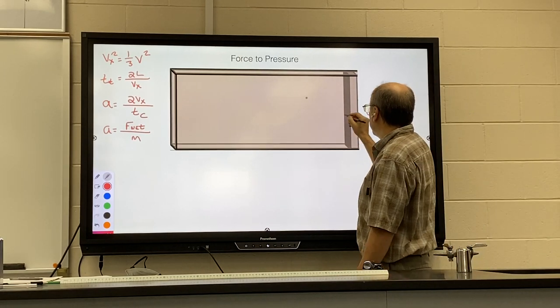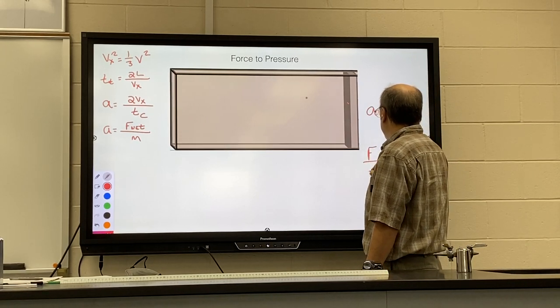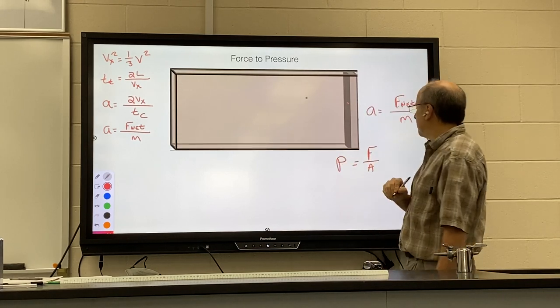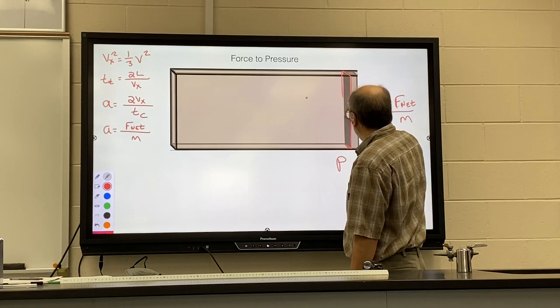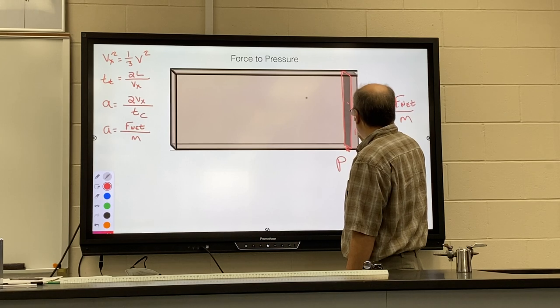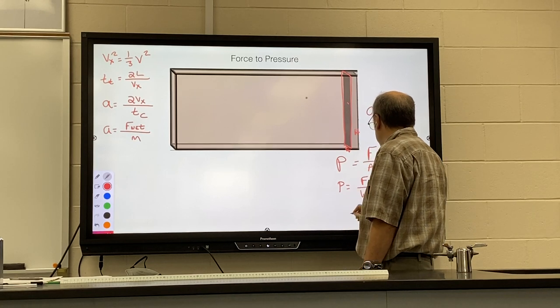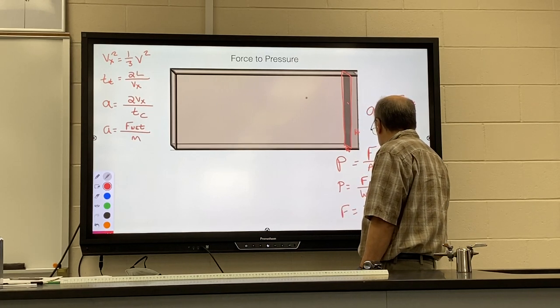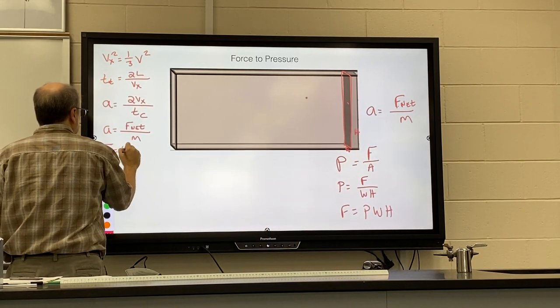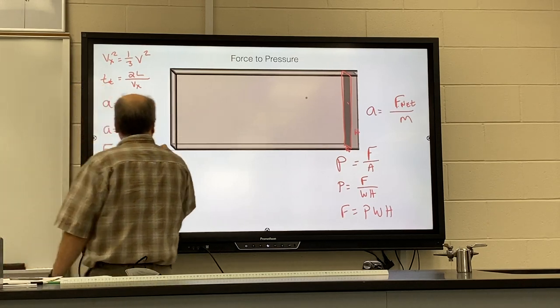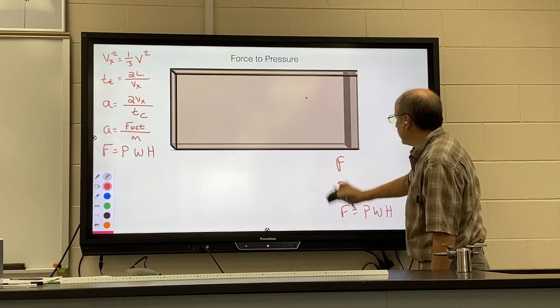We want to remember our force-to-pressure equation. When this particle hits the wall, it creates a force. Force—we want to remember that if we take the force divided by the area, that will equal the pressure on the wall. We're going to average it out over the entire surface of the wall, which again would be width and height. So we have pressure equals force over width times height, or force equals pressure times width times height. Put it in the bank to be used later. So we're gathering up all the formulas we're going to need for this derivation.